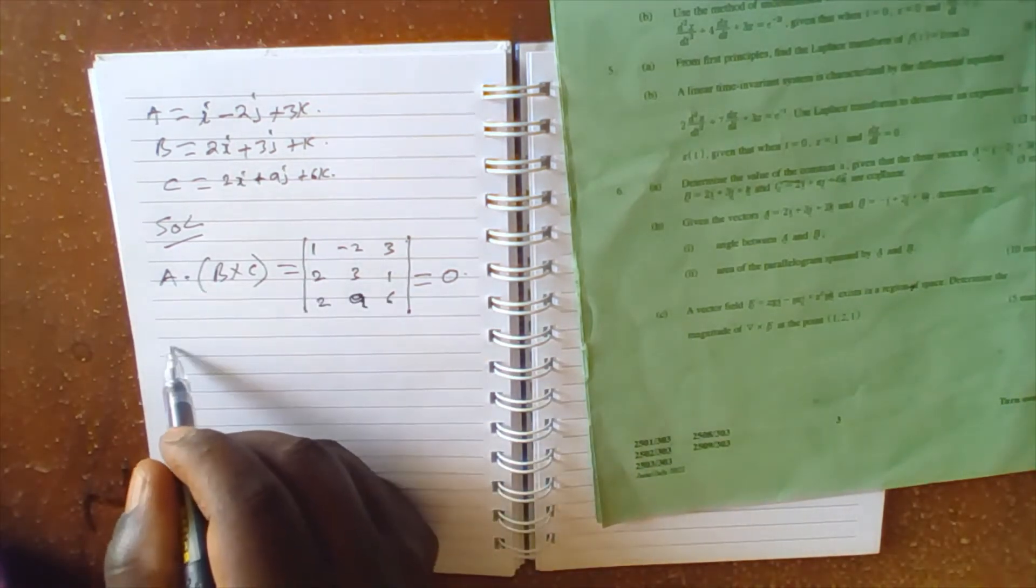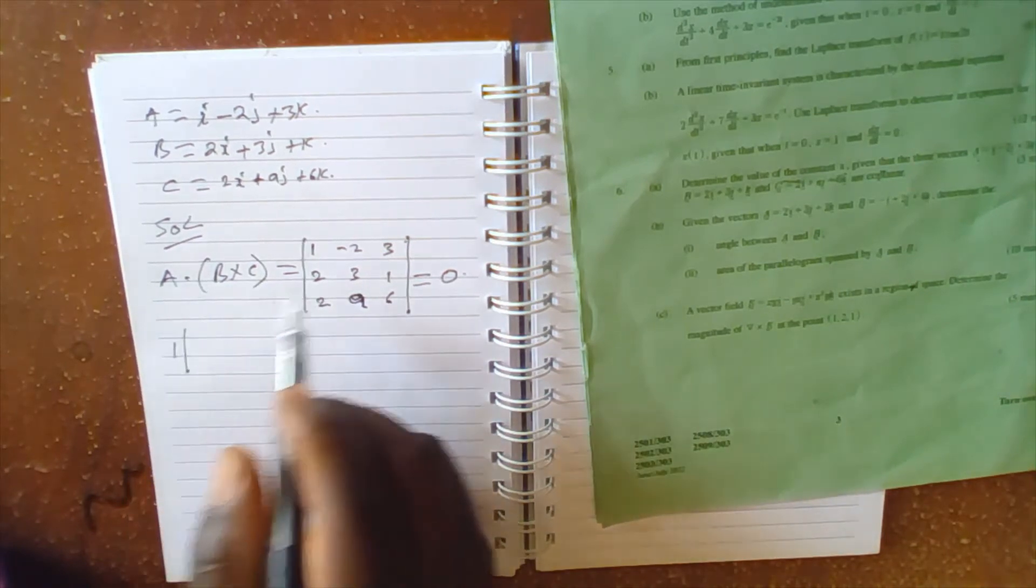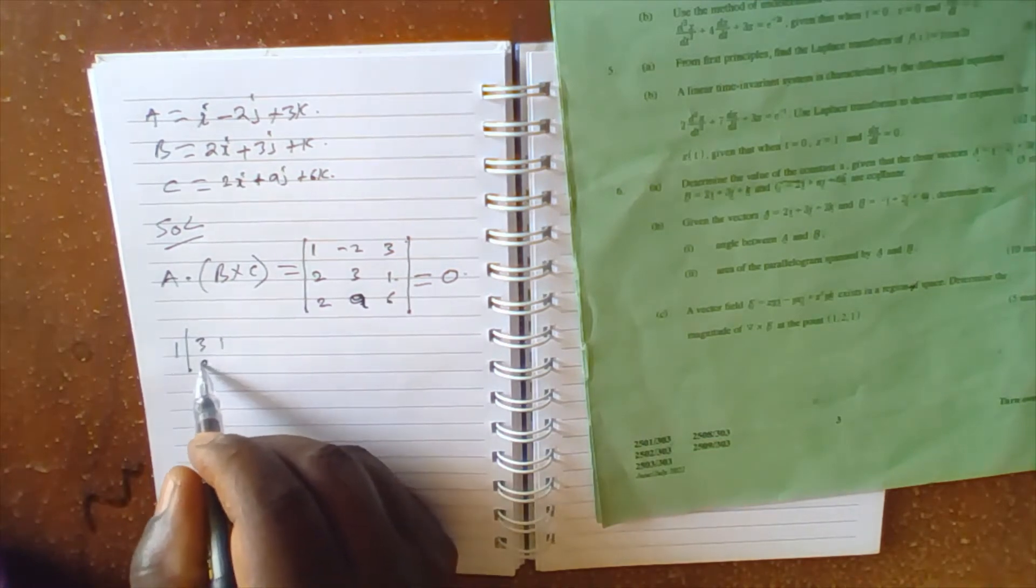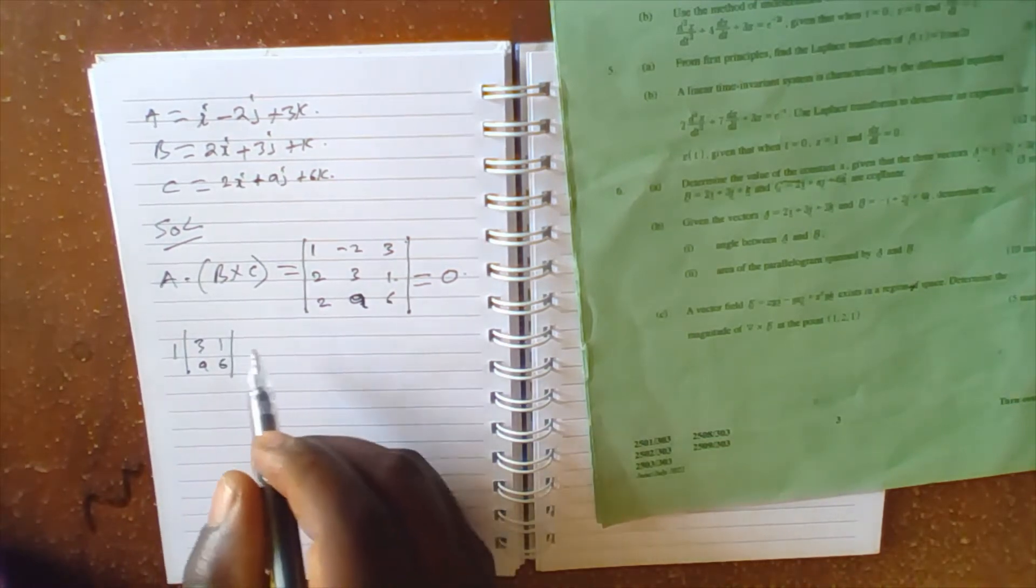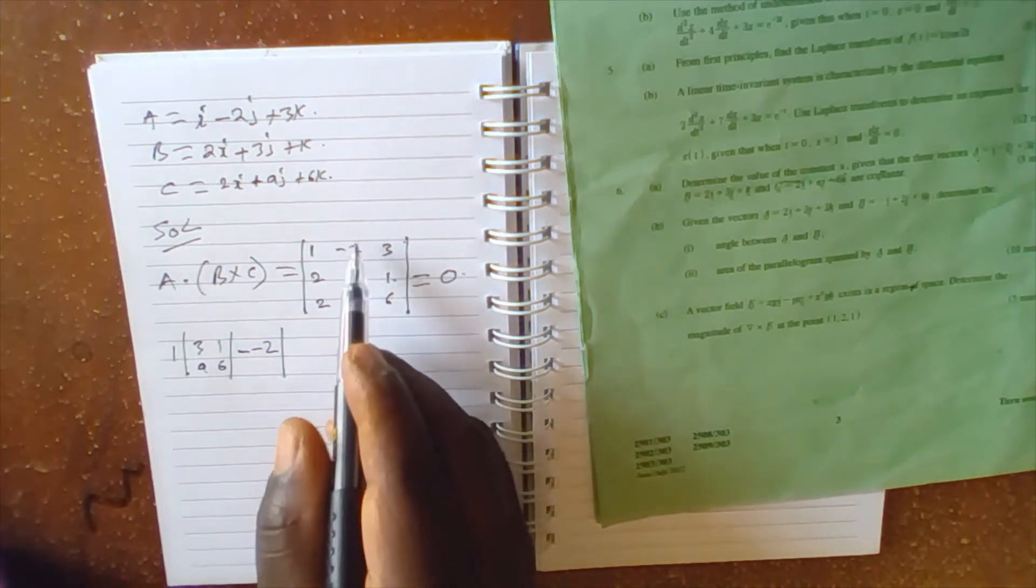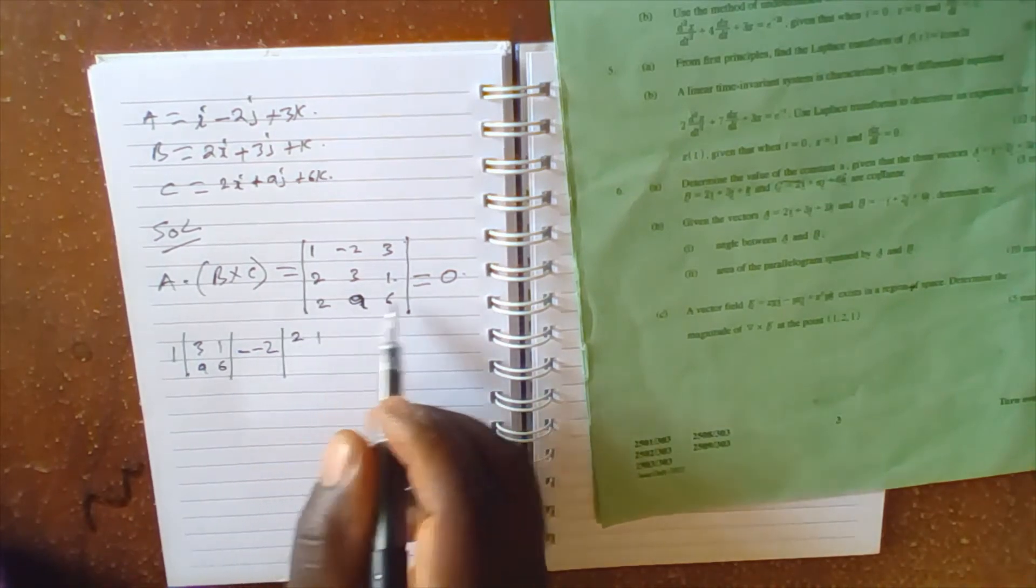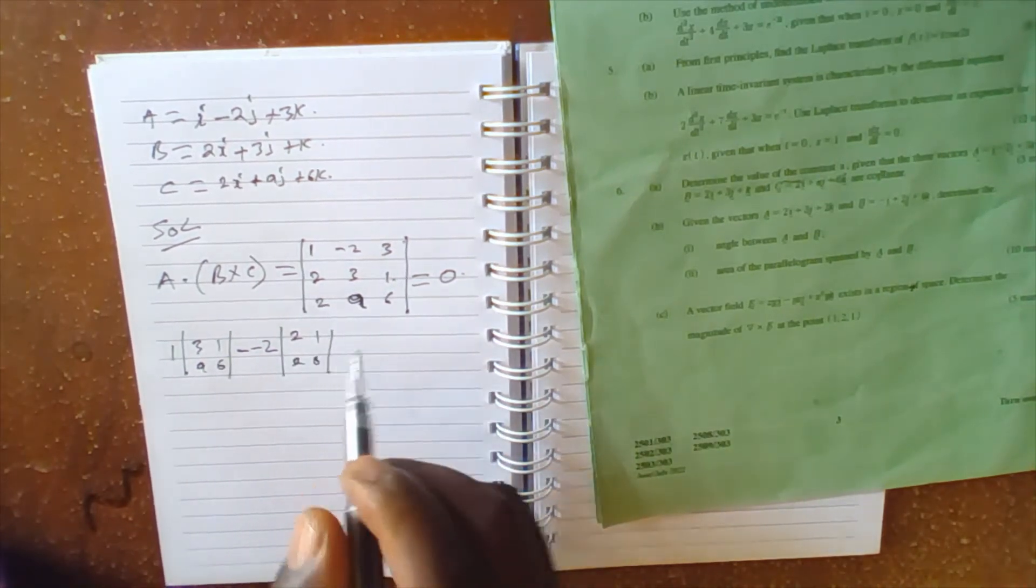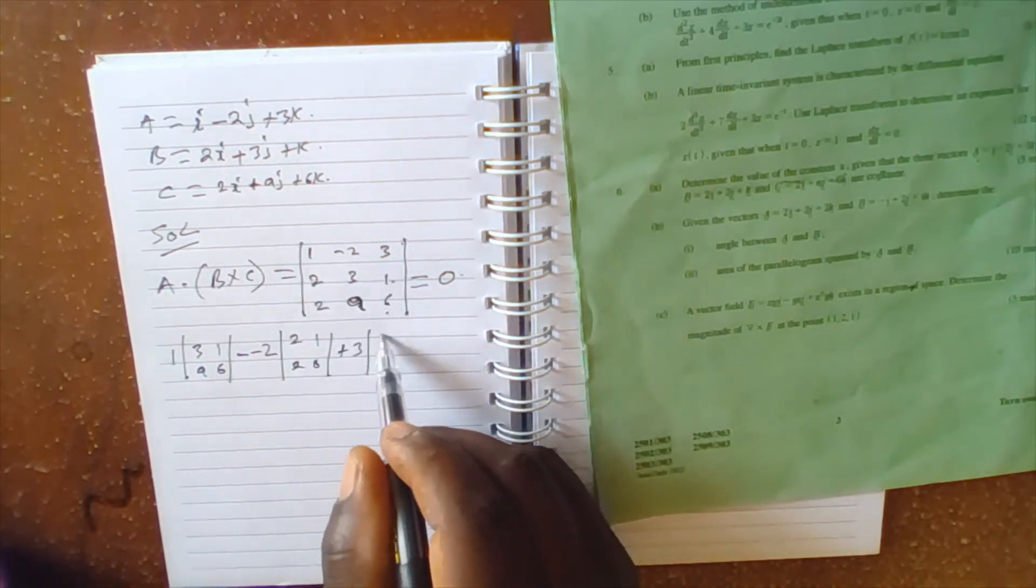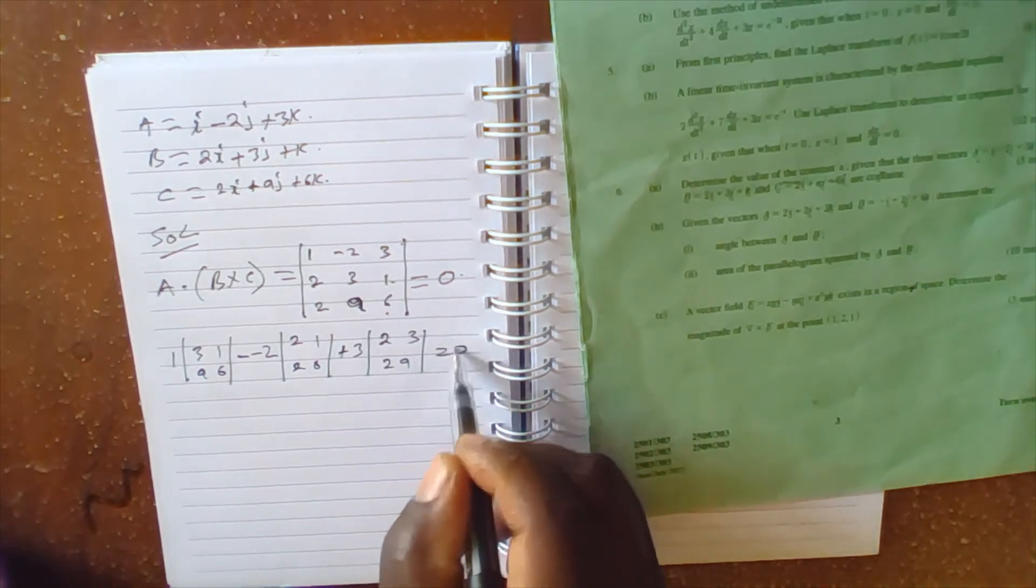So we can expand this. We will have 1 times the 2x2 determinant (3, 1; a, 6), minus negative 2 because we already have a minus, so block this column and row: 2, 1, 2, 6, plus 3, block this column and row: 2, 3, 2, a. This equals to 0.